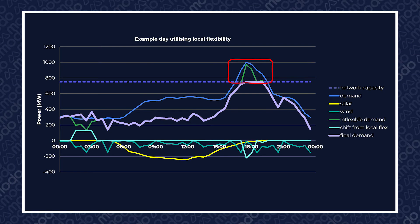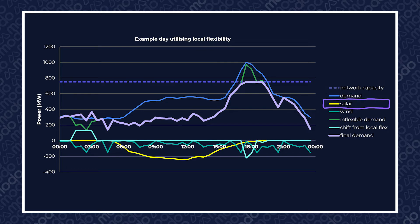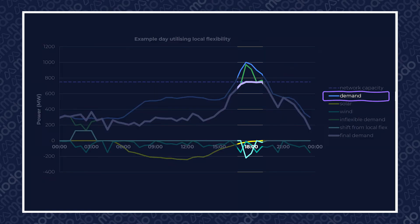Peak electricity consumption will exceed the capacity of networks in some areas which are particularly constrained. The graph on screen shows a simulation of a section of the network with a 750 megawatt capacity limit. There is distribution-connected solar and some onshore wind turbines. Demand is very high across the evening peak between 5 and 7 pm as domestic customers get home and plug in their electric vehicles.